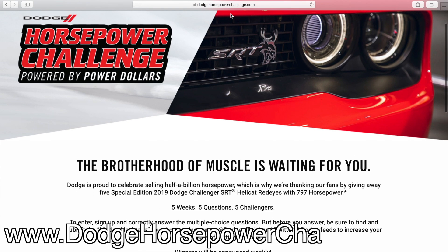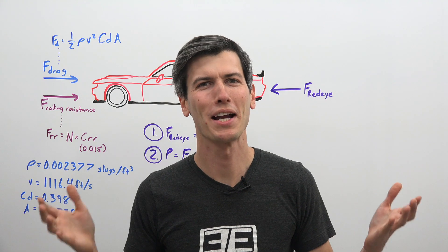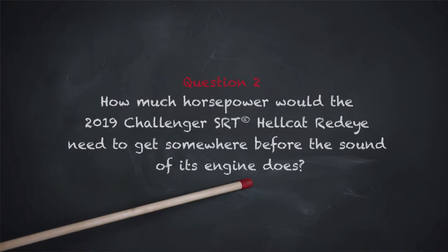To enter, simply go to DodgeHorsepowerChallenge.com where you'll have to answer a tough math question. That's where I come in to help. It's now week two and the question is how much horsepower would the Red-Eye need to reach the speed of sound?